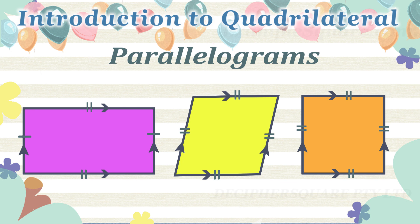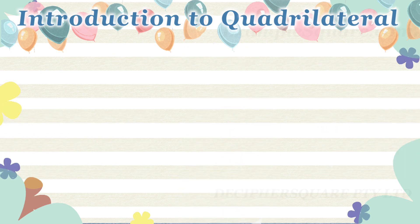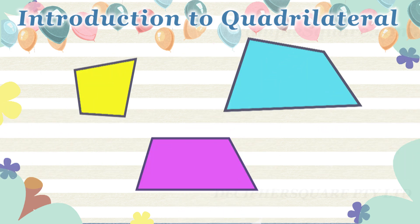A parallelogram is a quadrilateral in which opposite sides are parallel and equal. In squares, rectangles, and rhombuses, opposite sides are parallel and equal, so these shapes are also types of parallelograms. Apart from these, there are other types of quadrilaterals — some have only one pair of parallel sides, and in some, none of the sides are parallel.